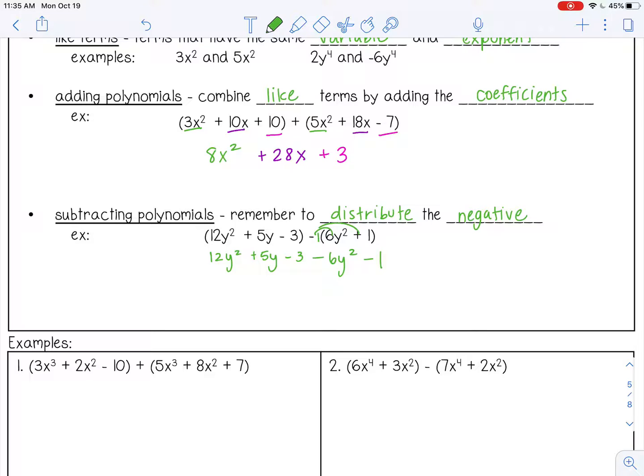Now if you want to keep the parentheses, you can. It's up to you. So let's get our like terms here. So I have 12y squared and 6y squared. So 12y squared minus 6y squared. Remember, whatever sign is in front of the term stays with that term. So that is 6y squared.